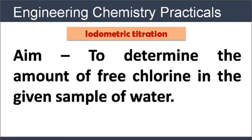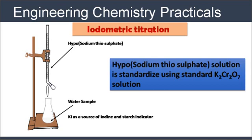Hello students, welcome to the Engineering Chemistry course. Once again we are starting our e-lecture series. Today we are going to discuss about the engineering chemistry practicals, in which we will learn about how to determine the amount of free chlorine in the given sample of water. Basically, this experiment is the type of iodometric titration.